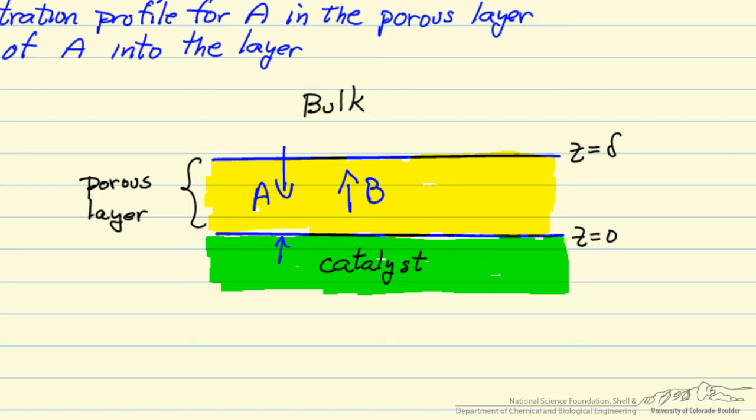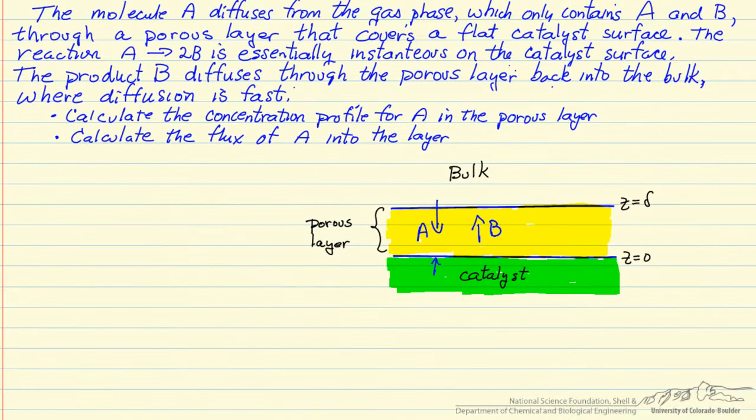And to do this we need to account for the fact that there's a mole change in this gas phase reaction, which causes a bulk flow in this porous layer. So the first thing we want to do is indicate our notation for flux. So this is the molar flux of A.